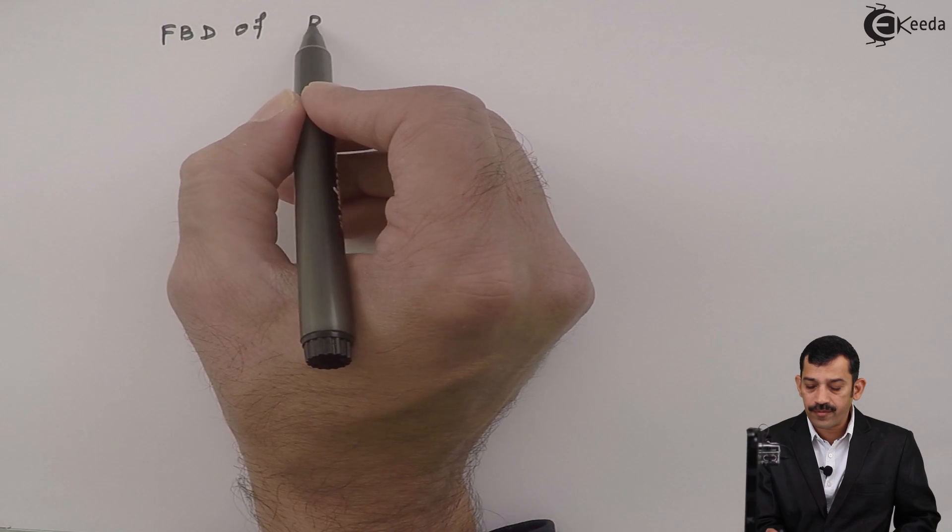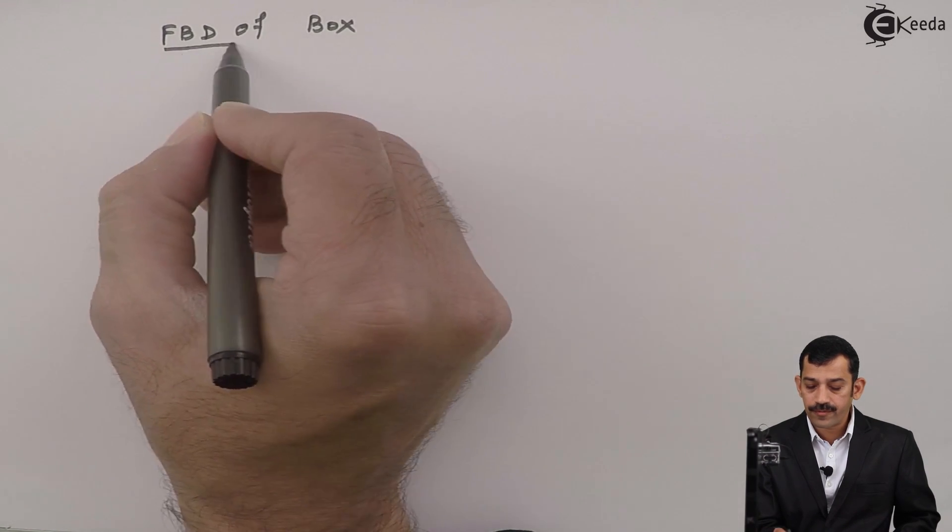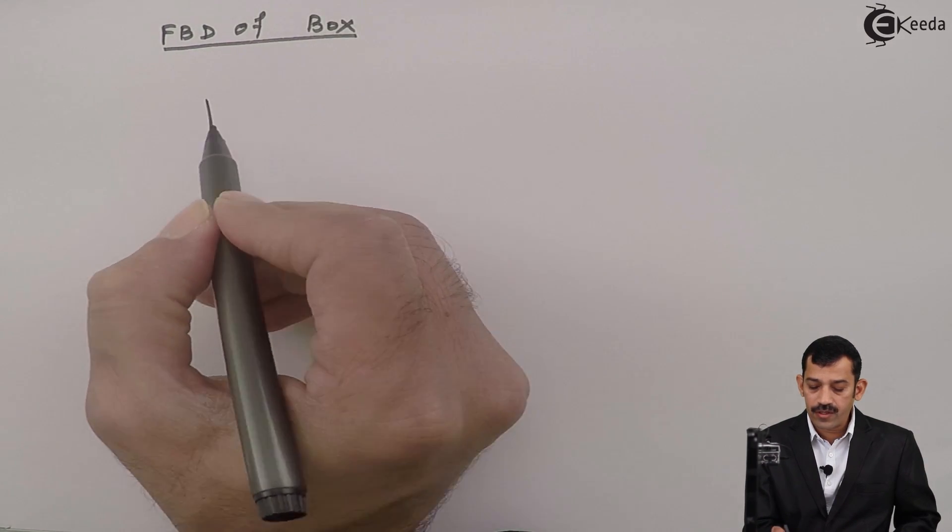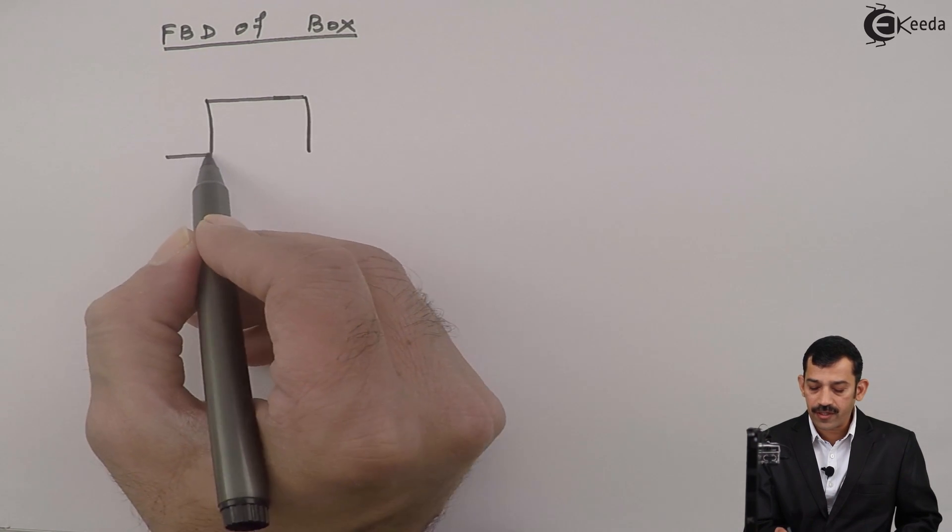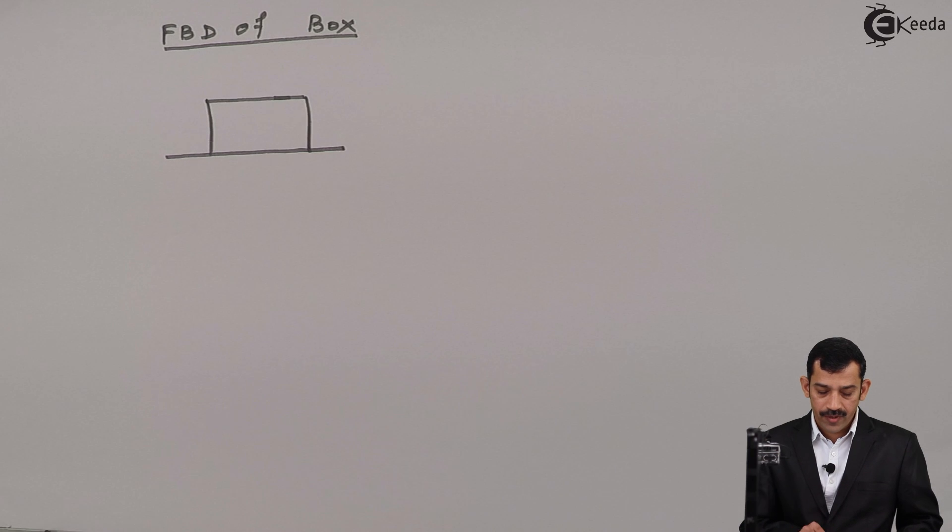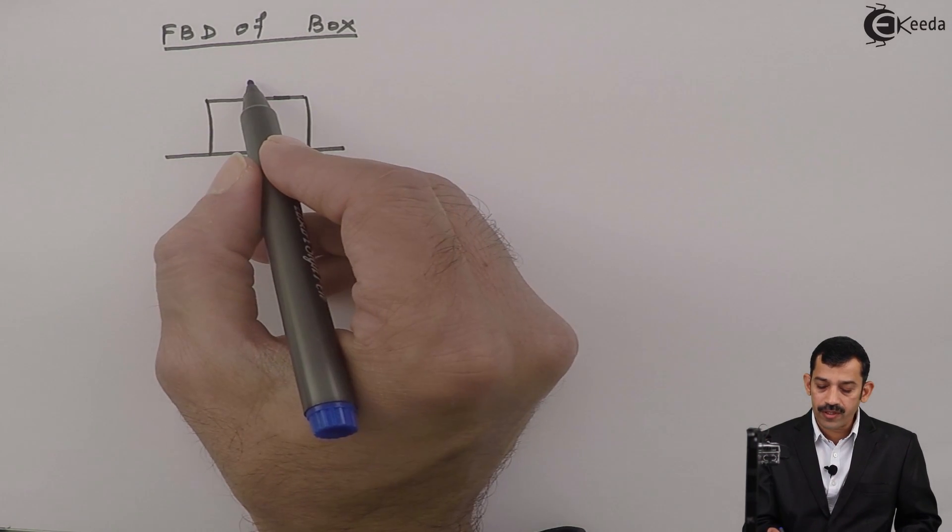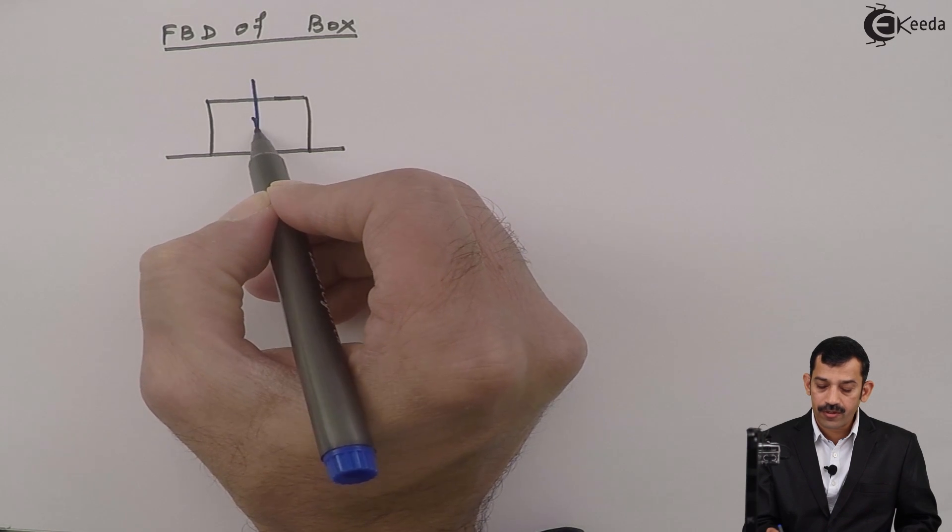FBD of box. Now this one, the box is initially at rest. Say this one is your reference line. Now which force acts here? Weight of this box.